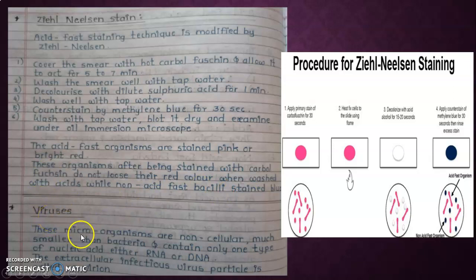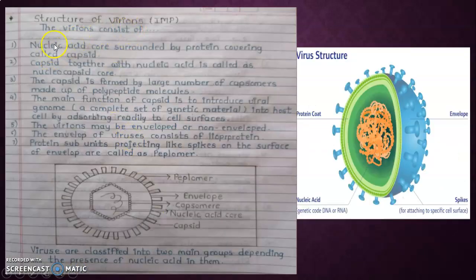Next we are going to talk about viruses. These microorganisms are non-cellular, much smaller than bacteria, and contain only one type of nucleic acid, either RNA or DNA. The extracellular infectious virus particle is called a virion. Virus structure: nucleic acid core surrounded by protein covering called capsid. Capsid together with nucleic acid is called nucleocapsid core.